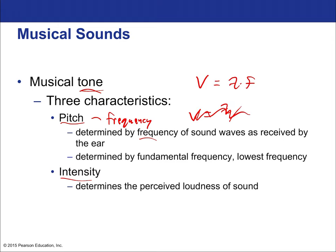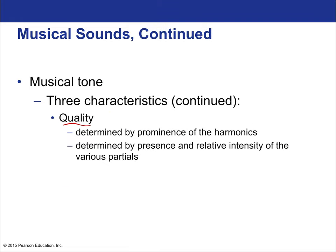Intensity, on the other hand, is a measurement of loudness. It has to do with energy per time per area — just as we would talk about the intensity of light, the intensity of a sound wave is measured in the same way in terms of fundamental units. Last, there is quality, which is determined by the prominence of harmonics and by the presence and relative intensity of the various partials, which are partial harmonics.